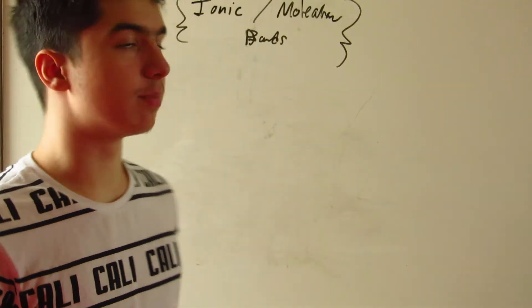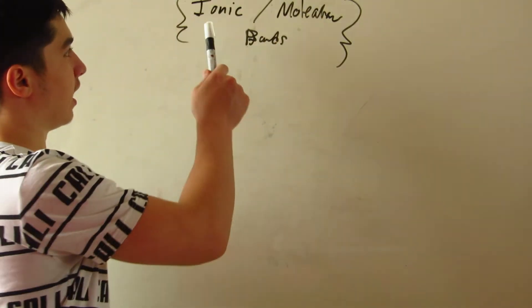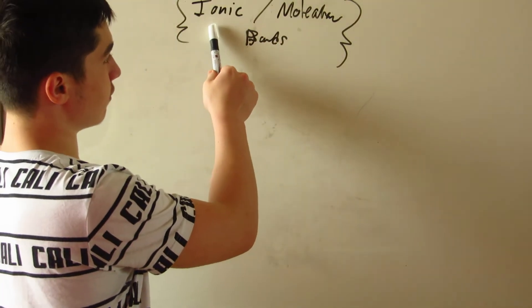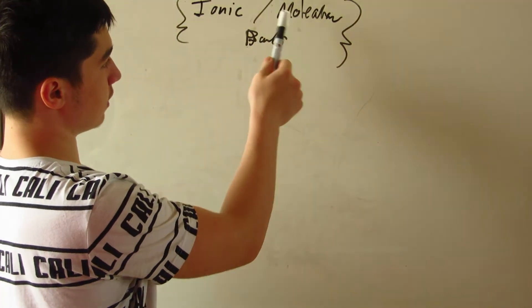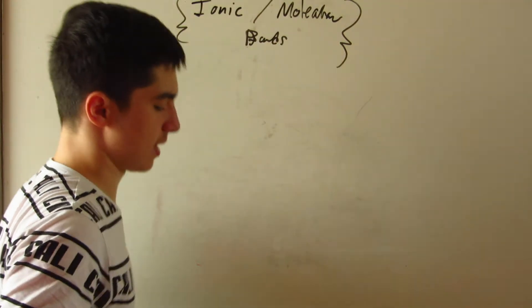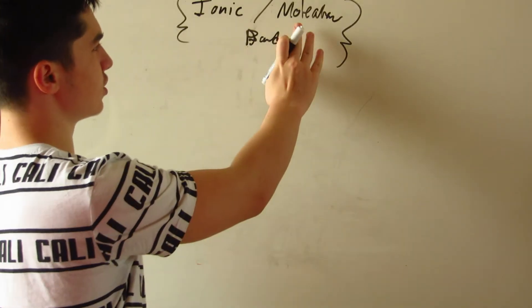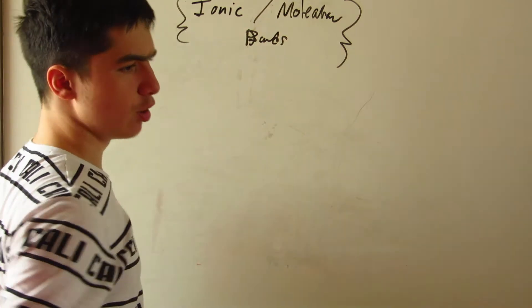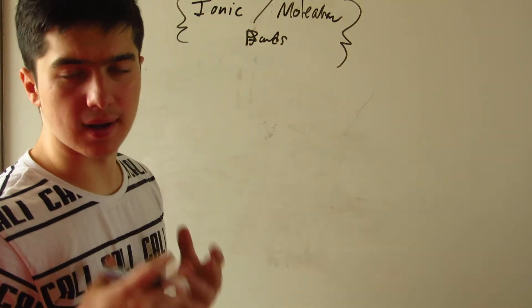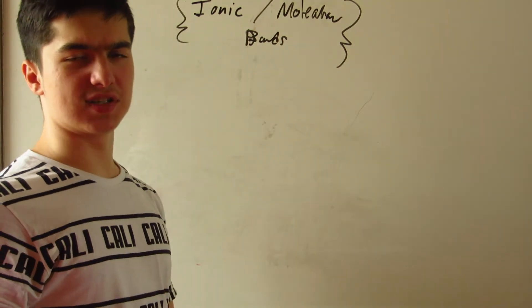Greetings, welcome to the EPI Chemistry course. Today I'm going to talk about ionic versus molecular bonds. So if we remember, what are ionic and molecular bonds? Molecular bonds are simply bonds between nonmetals.